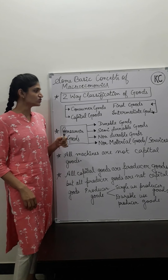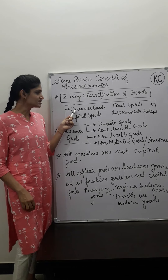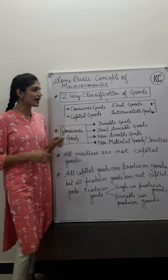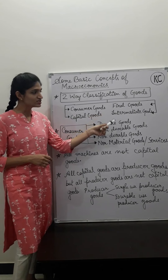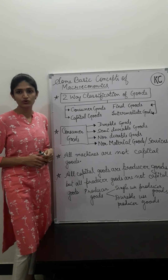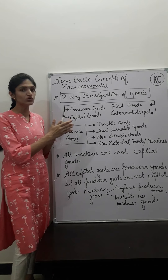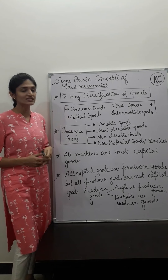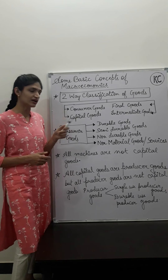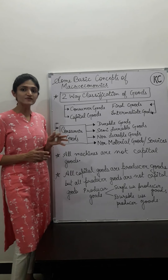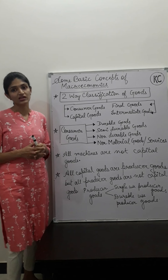The two-way classification of goods gives us two types. First is consumer goods and capital goods. Second is final goods and intermediate goods. Today we will discuss the first portion: consumer goods and capital goods. So first, let's talk about consumer goods.